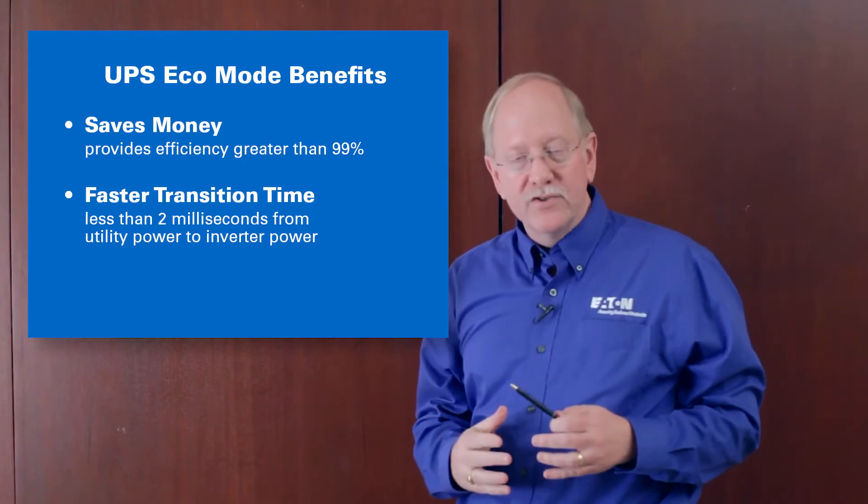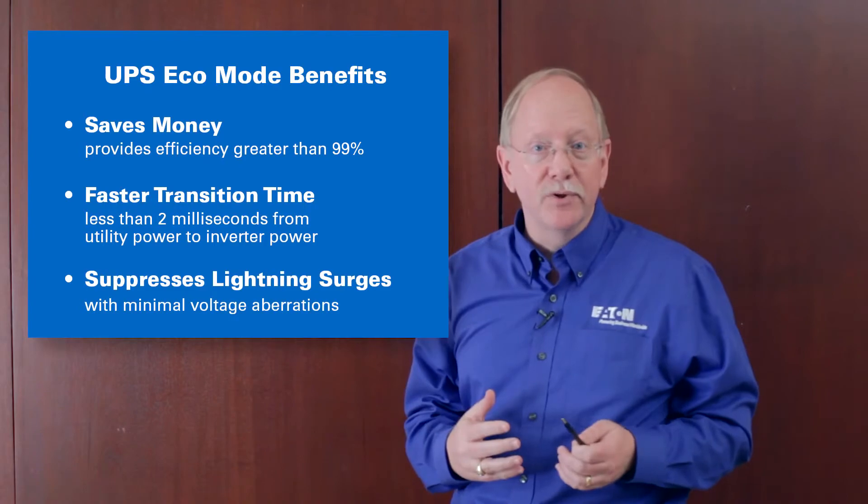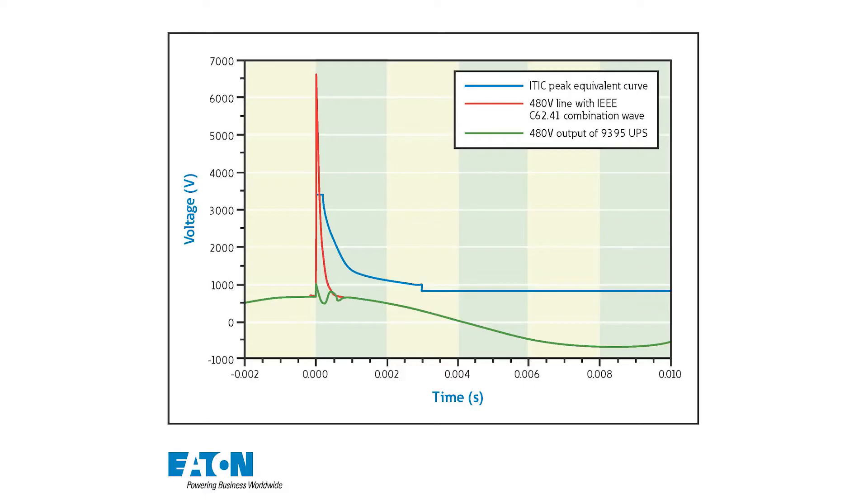One of the primary concerns with eco mode UPS operation is what if I have a disaster like a lightning strike on the input terminals of the UPS. So this graphic shows how that would look. I have a 6,500 volt very narrow spike here on the input of the UPS in eco mode but the green line here shows only a small voltage aberration at the output of the UPS.